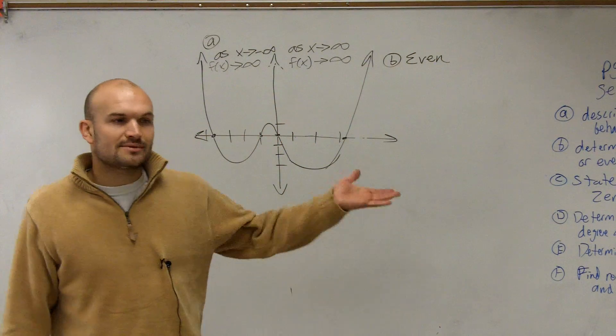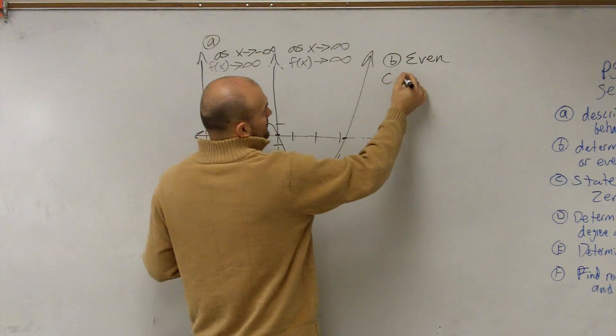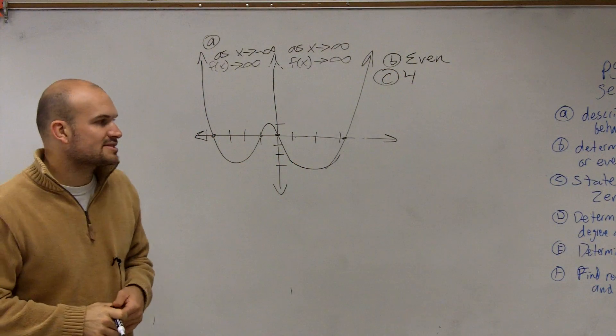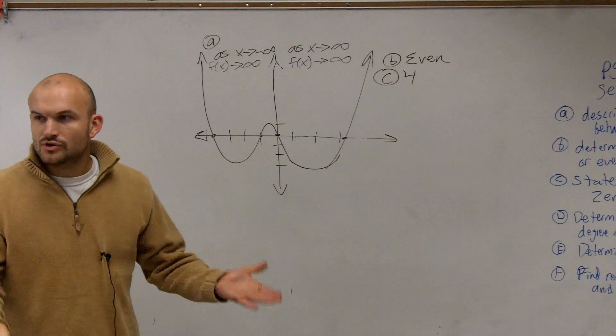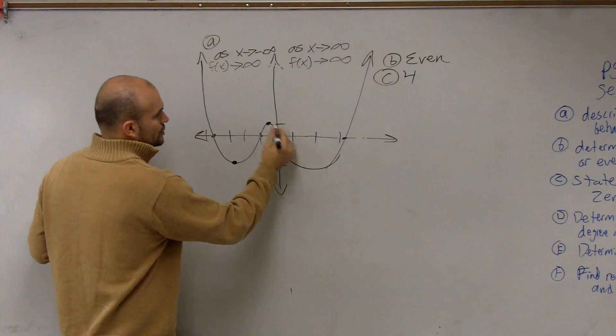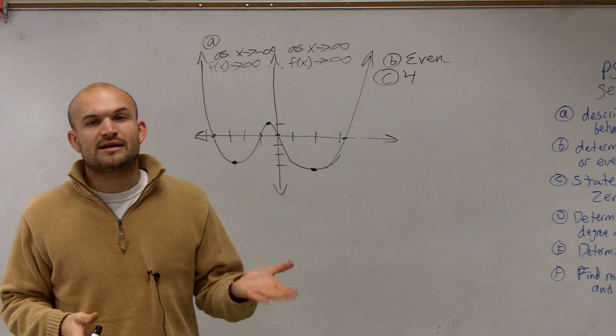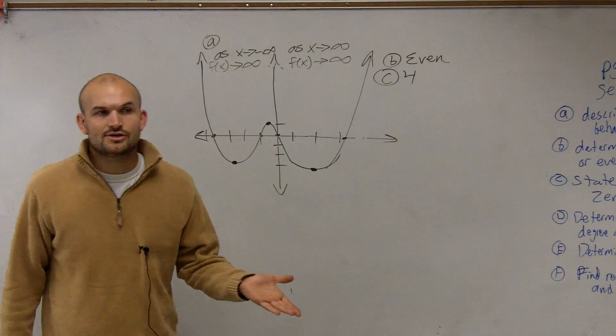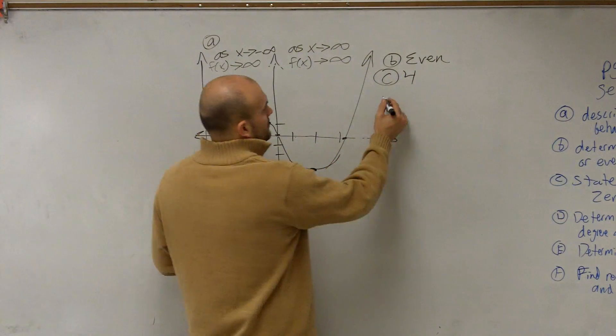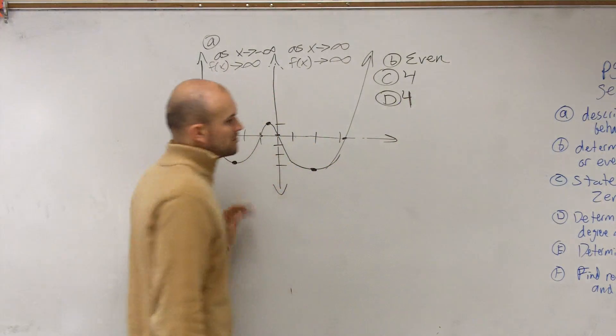For C, we can simply just state the zeros, which we could say we have four of them. Then for D, it says determine the smallest degree of the function. So again, we look at the number of turning points. So here we have one, two, three turning points. And remember, turning points was your degree minus one. So if I have three turning points, that means my smallest degree I can have is four.